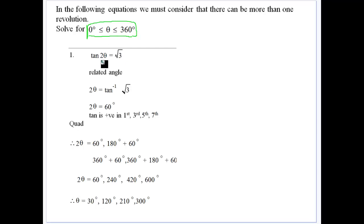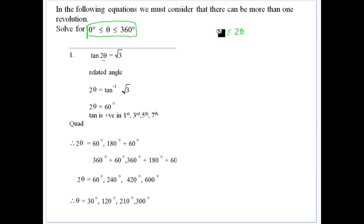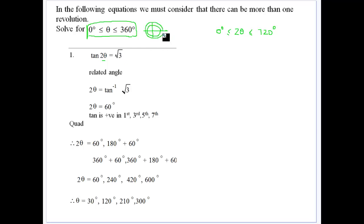The only problem is that when we're looking at our questions here, we're looking at tan of 2 theta. So what we've got to be careful about is that if theta is between 0 and 360, and we're going to consider 2 theta, then 2 theta must be 2 lots of theta. The domain for 2 theta must be between 0 and 720, which is 2 lots of 360 degrees. So instead of considering just one revolution between 0 and 360, for 2 theta we must consider 2 revolutions.